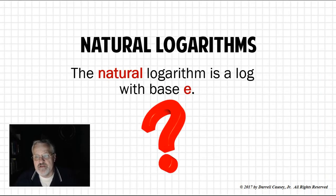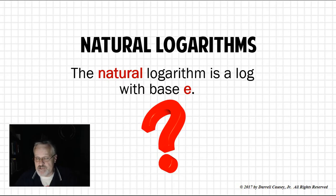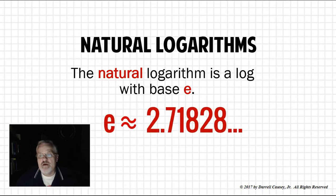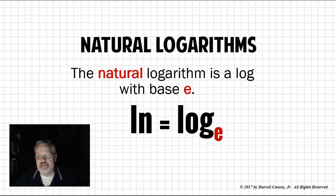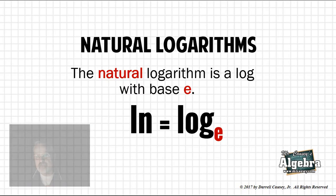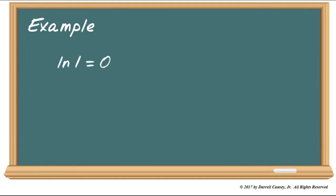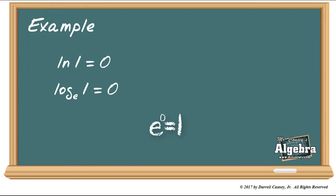Natural logarithms. The natural logarithm is very common. Base E has to do with the number E, which is an irrational number, very similar to pi, and it shows up a lot. E is approximately 2.71828, and we usually round it to 2.72. Natural log of E equals 1, and when we write natural log, that's the same as saying log base E. Because natural log equals log base E. For example, natural log of 1 equals 0, which is the same as log base E of 1 equals 0, meaning E to the 0 power is 1.